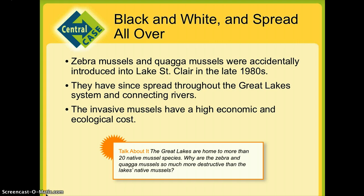Our central case study for this chapter looks at the Great Lakes and zebra mussels — you can find that in your textbook on pages 124 and 125. Zebra mussels are black and white freshwater mussels and they are an invasive species, which is why they have spread so widely. Zebra mussels were accidentally introduced into Lake St. Clair in the late 1980s and have since spread throughout the Great Lakes system and connecting rivers. The invasive mussels have a high economic and ecological cost.